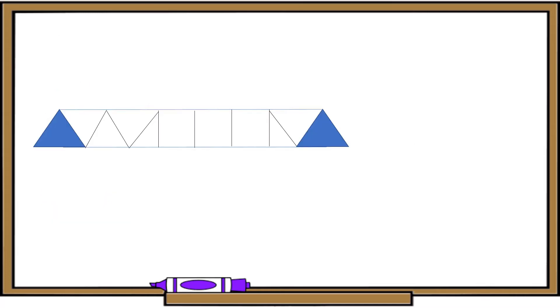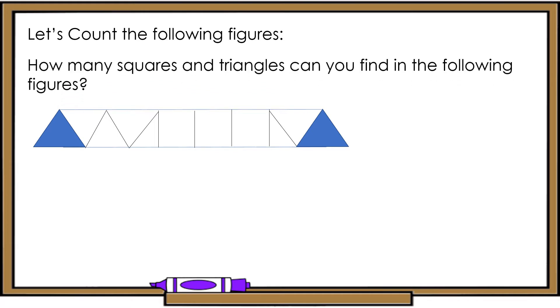Now, kids, let's count the following figures. How many squares and triangles can you find in the following figures? Let's count the triangles. 1, 2, 3, 4, 5, 6, 7, and 8. How about the squares? 1, 2, 3. There are 3 squares and there are 8 triangles.